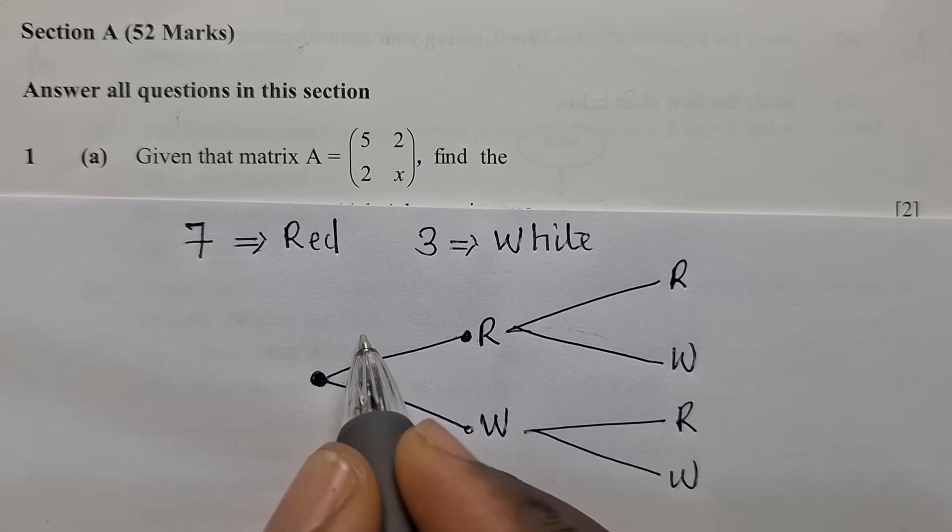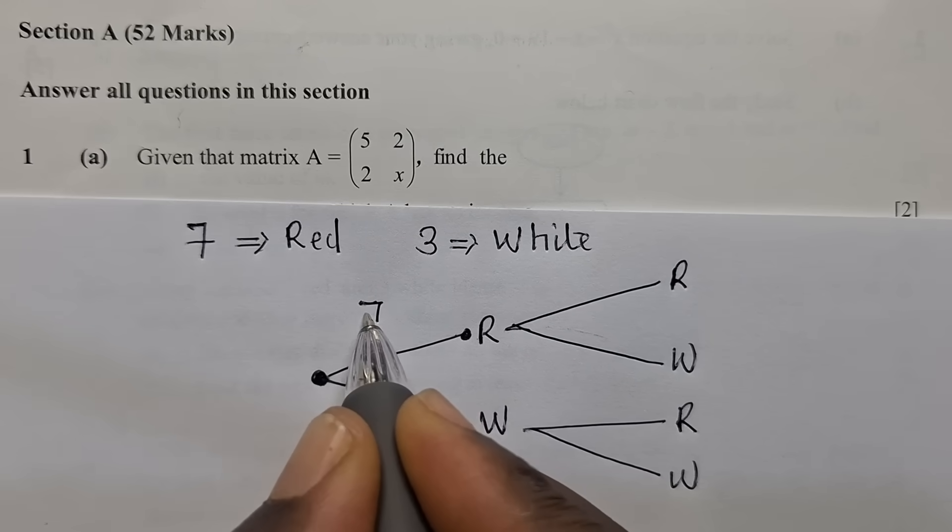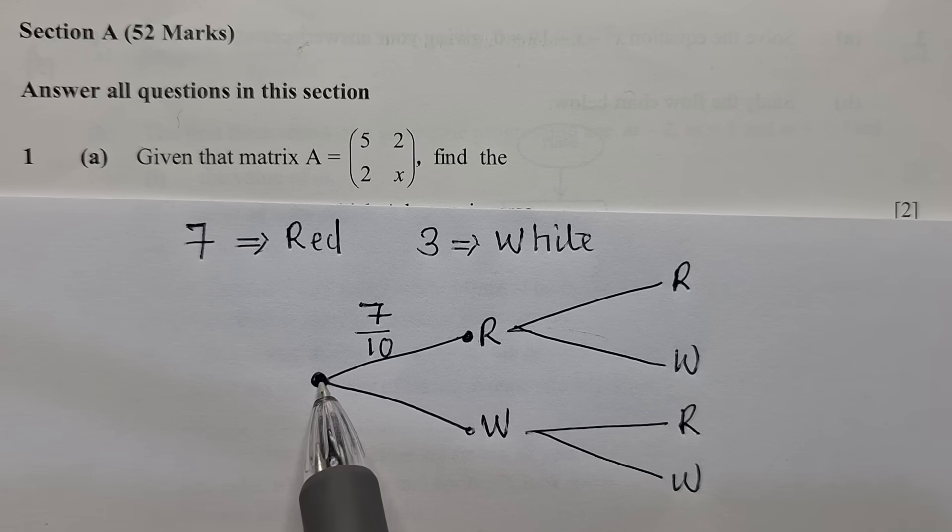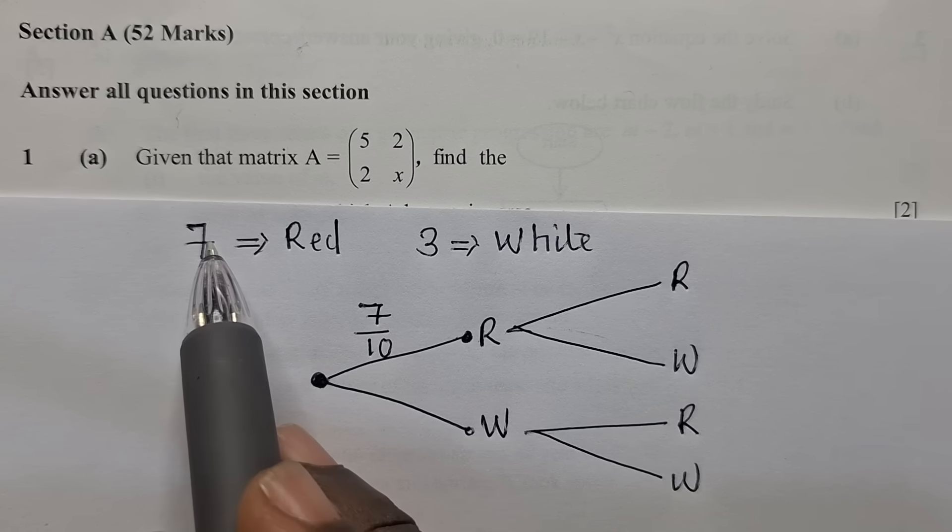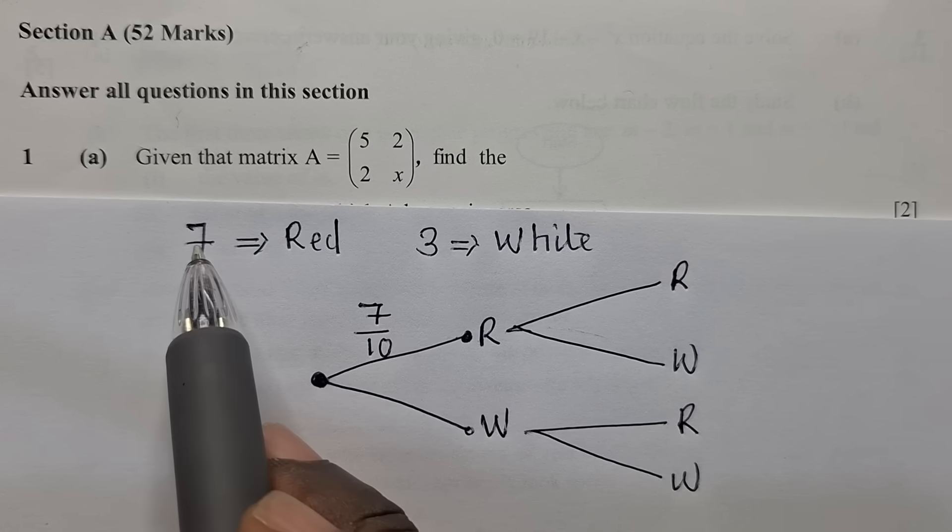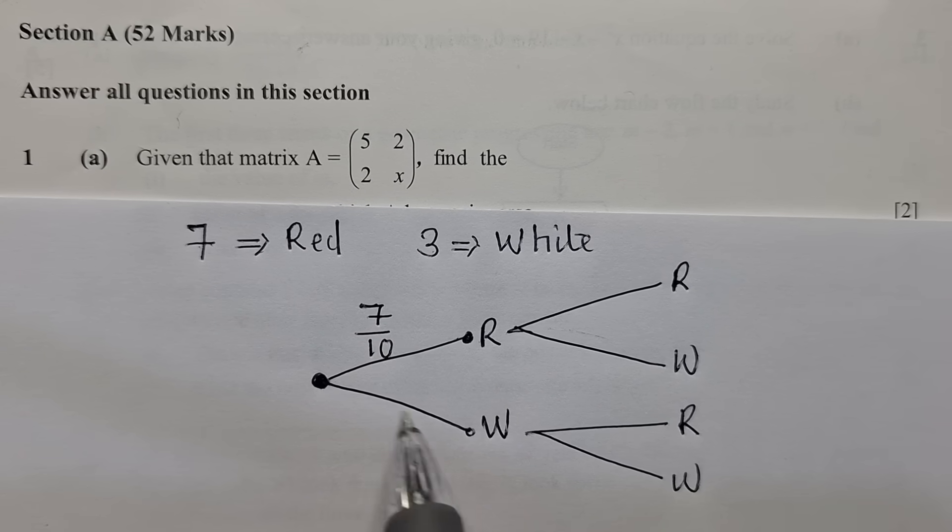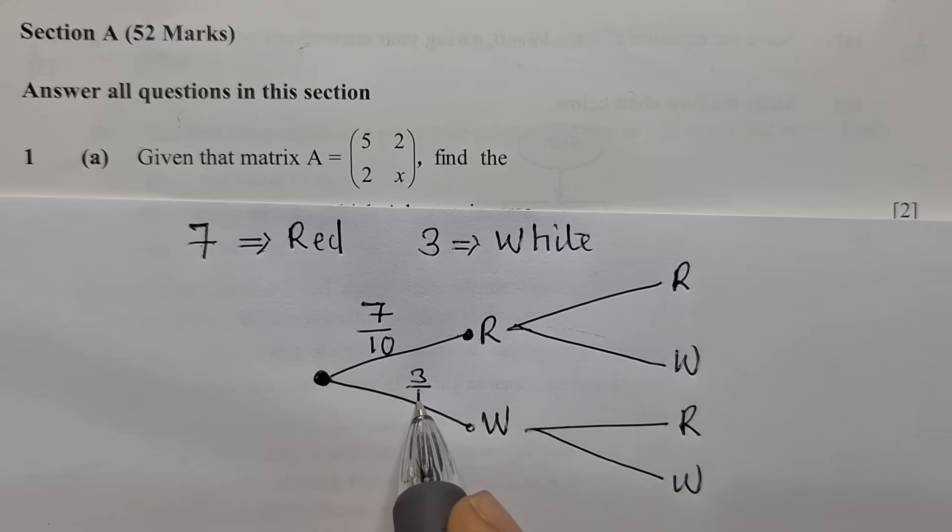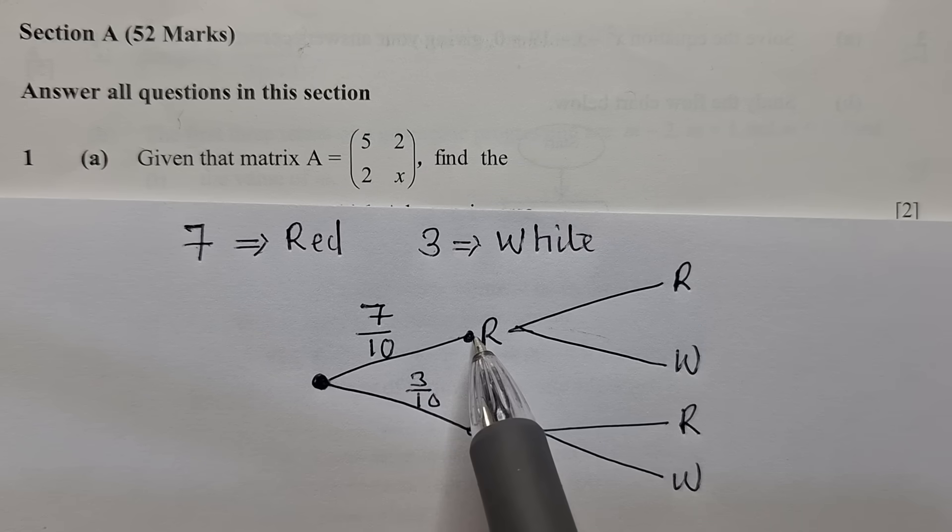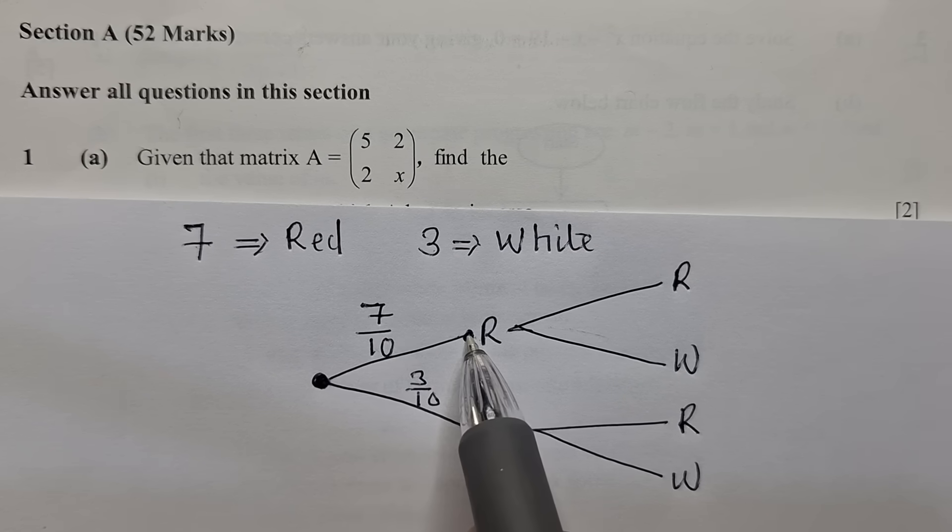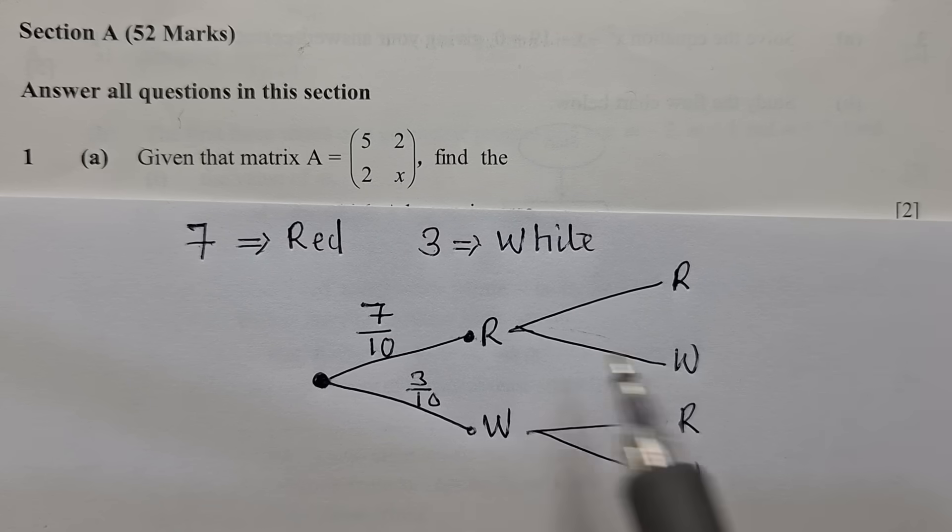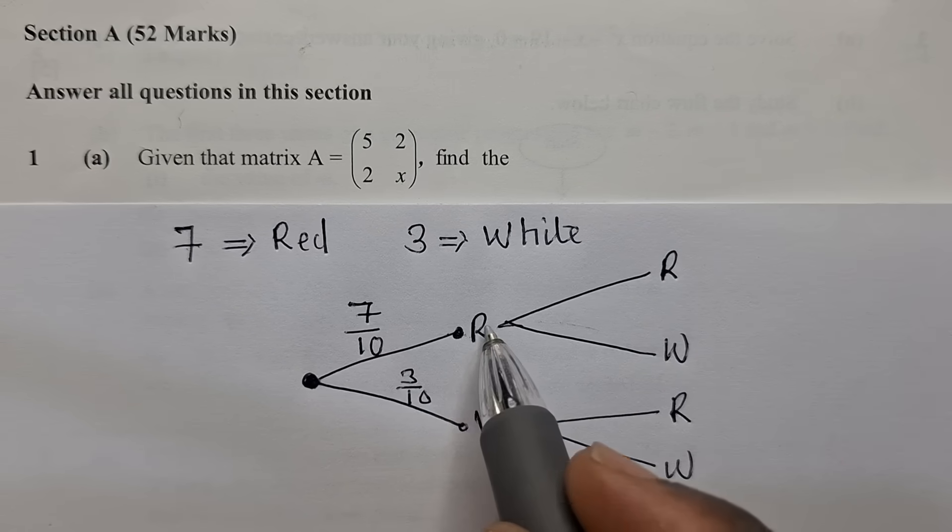You first write the tail for red and white. Each tail where it's ending here should have the set which is coming from this side. So here, we're going to write 7 over 10. Where is this 7 coming from? They've said red is 7. So it should be 7, which is for red, over the total. So 7 plus 3, it's 10. For white, it's 3 over the total, which is 10. So here, when you pick red, this is the probability of picking red, this is the probability of picking white.